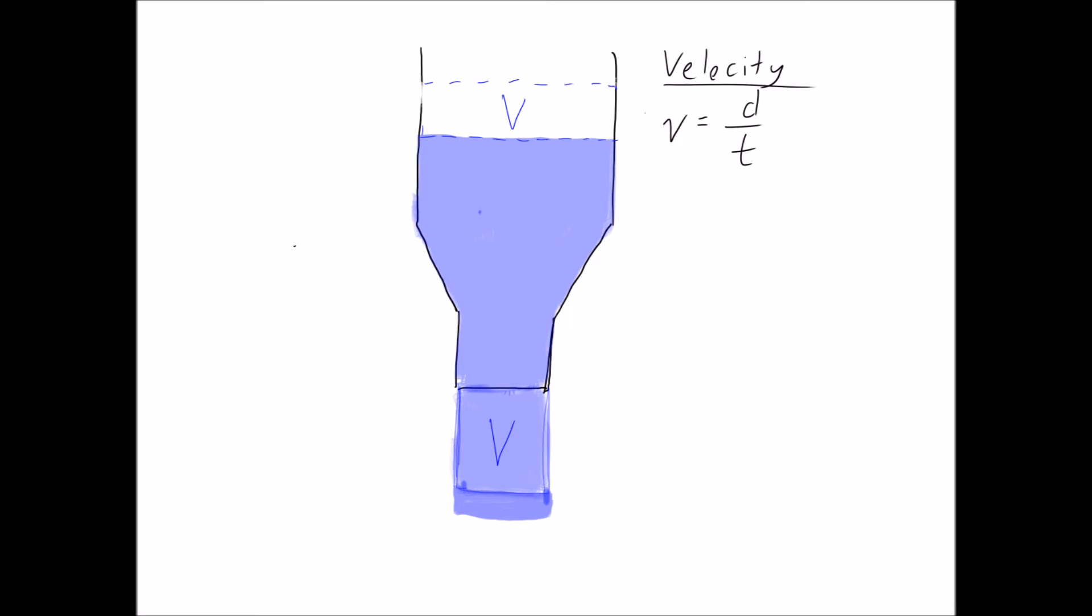the velocity of the molecule at the bottom of the pipe is greater than the molecule at the very top, since d2 is greater than d1, meaning that the molecule at the bottom traveled a greater distance than the molecule at the top during the same amount of time.